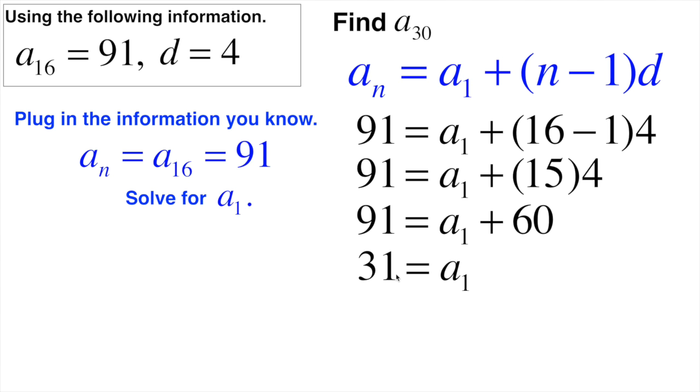The reason why I'm doing that is because I'm trying to create this explicit formula, this formula that will work all the time for this particular sequence. Then I can just plug in 30, and I'll be done. So here's what I'm going to do. I know this one now. aₙ - we don't know what n is yet. We're going to find that out in just a second. It's going to be our 30. This 31 came from right here - we know a₁ is 31. That's the first term in this sequence. And the common difference is 4.